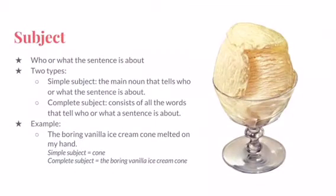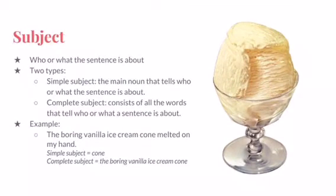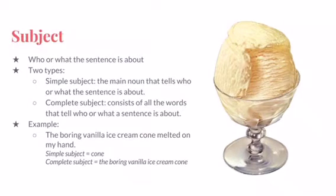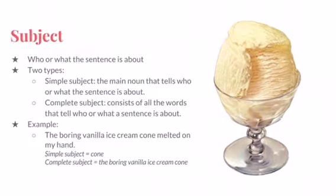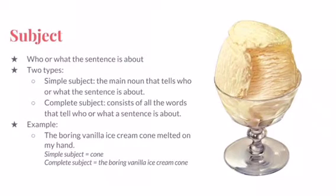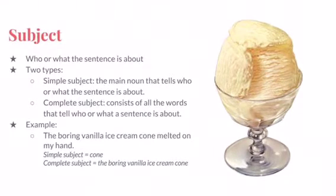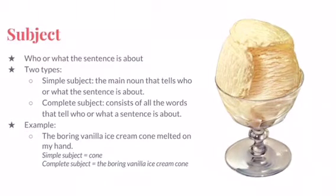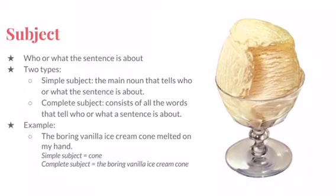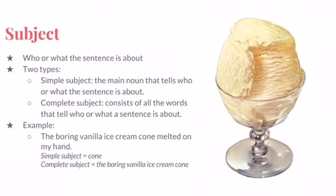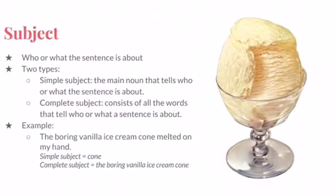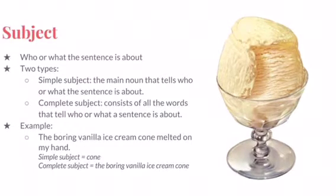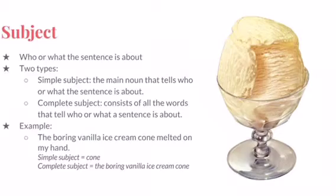The subject is who or what the sentence is about, and there are two types. The simple subject, which is the main noun that tells who or what the sentence is about, and the complete subject, which consists of all the words that tell who or what a sentence is about. Here's an example: 'The boring vanilla ice cream cone melted on my hand.' The simple subject is the word 'cone,' because it describes what the sentence is about — the cone melting on my hand. The complete subject includes 'cone' plus all the words that describe it: 'the boring vanilla ice cream cone.'